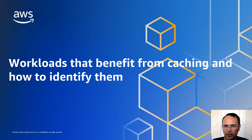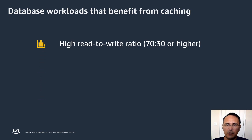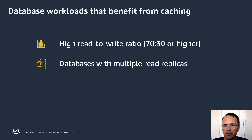Now let's see how to identify workloads that are good candidates to be paired with ElastiCache. One of the first approaches is to find databases with high read-to-write ratios, meaning that a higher percentage of the workloads are reads than writes — 70/30 or higher would be ideal. The higher the read ratio, the better candidate the workload is for a caching service. Next, databases with multiple read replicas are also good candidates — if you've had to add read replicas, your database is doing a lot of reading and you're seeking more read throughput.